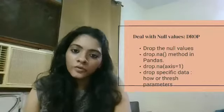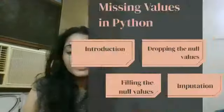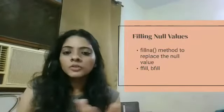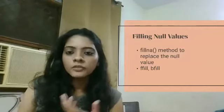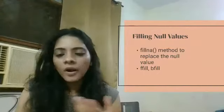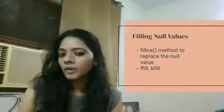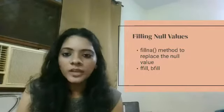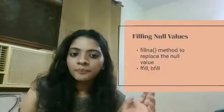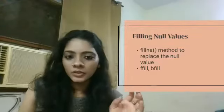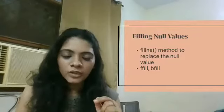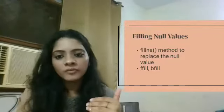Another way of dealing with null values is filling them. You fill these null values either with a specific value or with another parameter, like a number, depending on your dataset. The method we use is your dataframe's fillna() method, which replaces the null values. You can also fill null values with forward fill or backward fill.